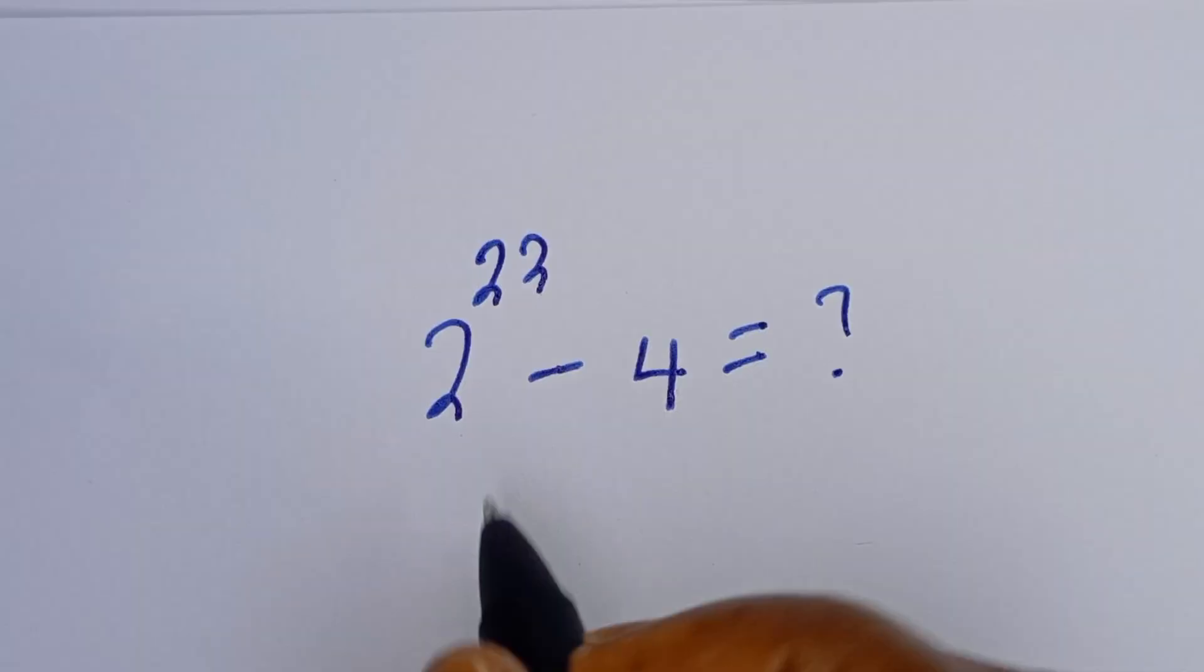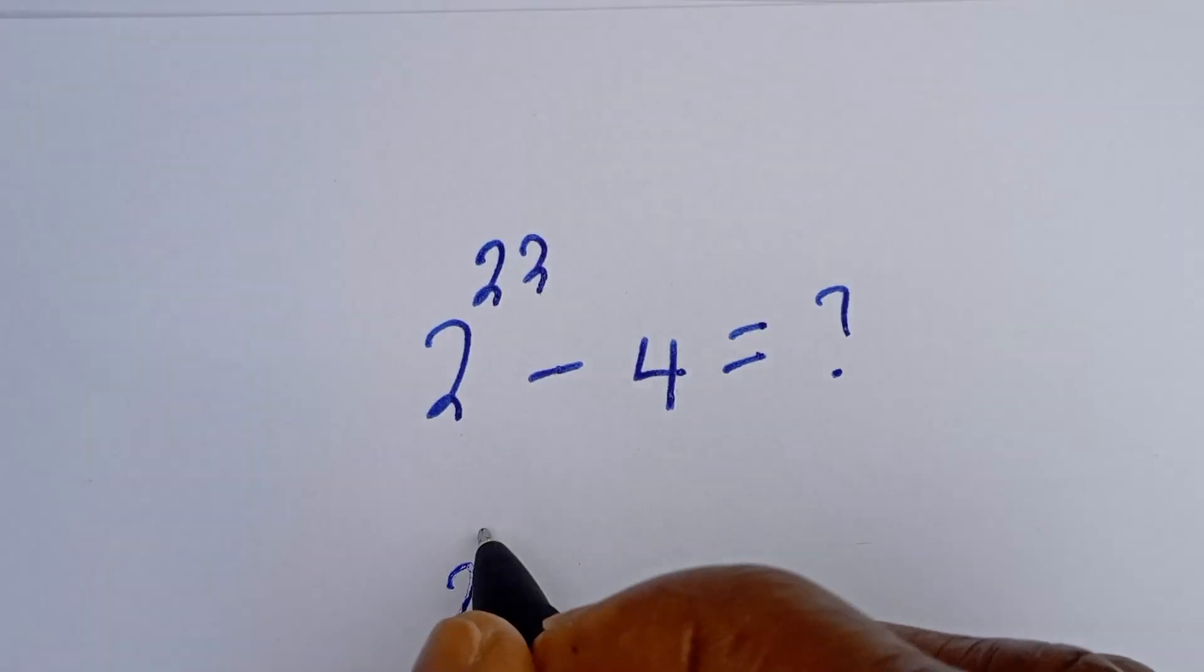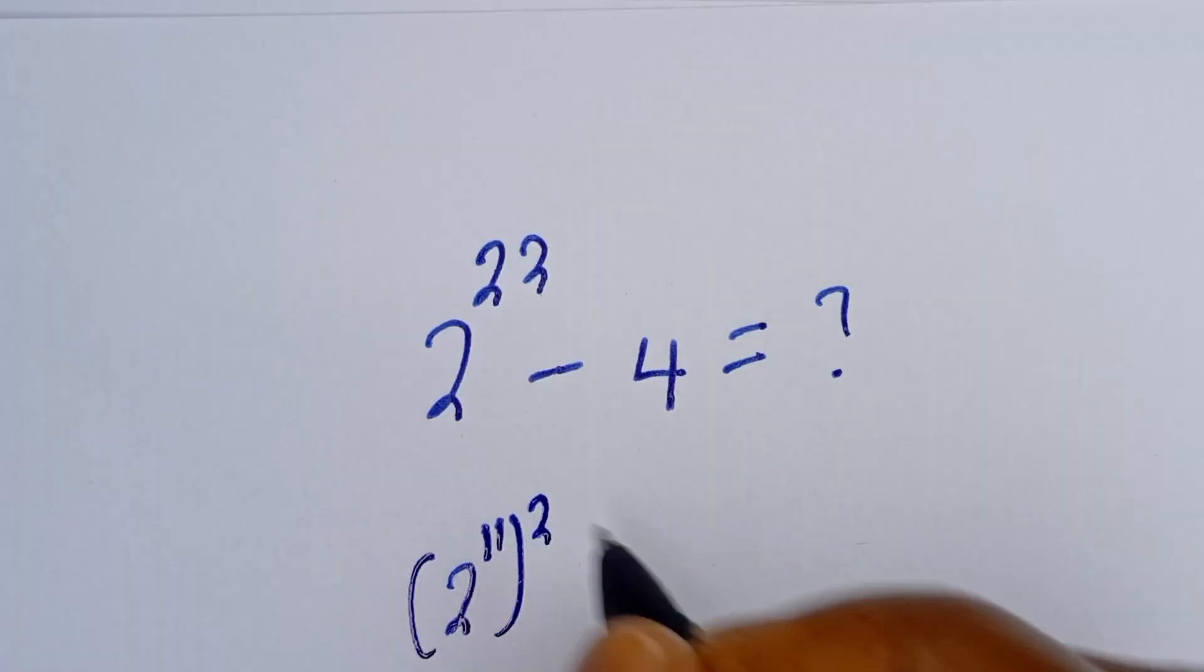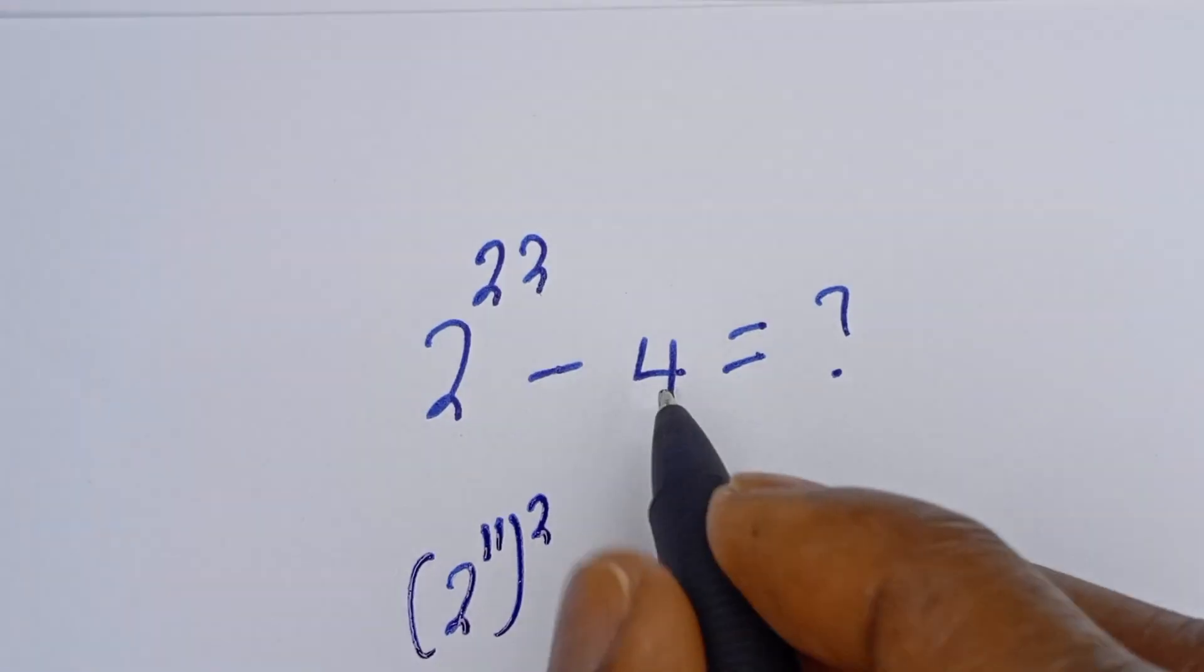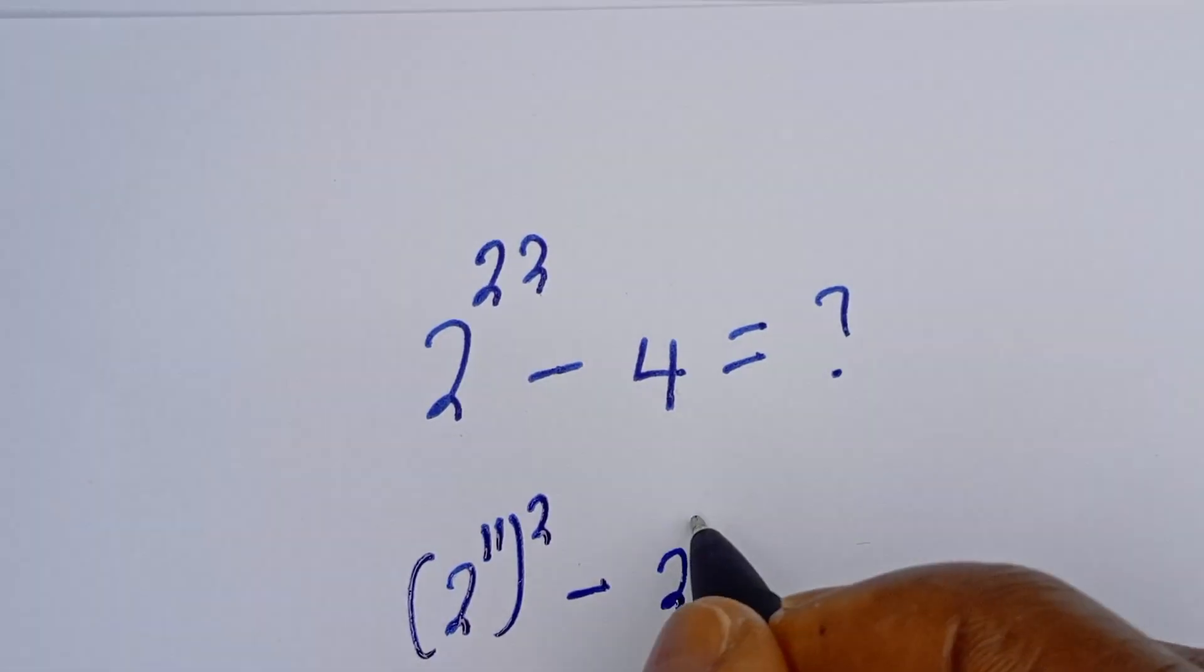This can be written as 2 to the power of 11, then squared, minus 4 can be written as 2 squared.